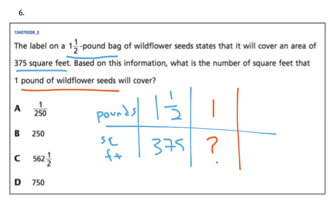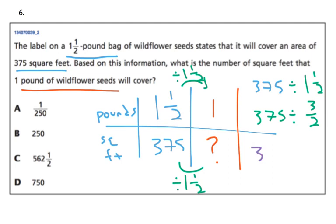And now, this problem is as easy as the very first problem. So if I want to get to 1, I'm going to do 1.5 divided by 1.5. I'm going to do the same thing down here. So that's 375 divided by 1.5, which is the same as 375 divided by 3 halves. Then I multiply by the inverse, which is 2 thirds. And 375 times 2 would be 750, and that's 750 divided by 3. And then 750 divided by 3, well, 75 divided by 3 is 25. So that's like 250. And that's why the answer is B.